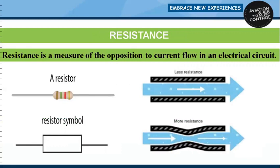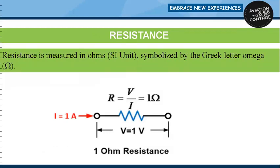Resistance: when a potential difference is applied to a conductor, current starts flowing. While moving, the free electrons collide with the atoms and molecules of the conductor. Due to these collisions, the rate of flow of electrons is restricted. This opposition offered by a substance to the flow of electric current is called resistance. Resistance is measured in ohms (Ω). One ohm of resistance means a current of one ampere flows when a potential difference of one volt is applied.